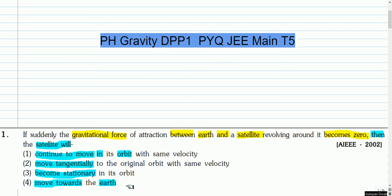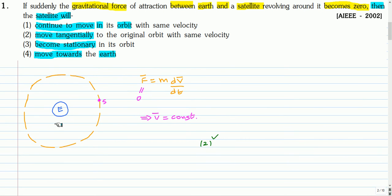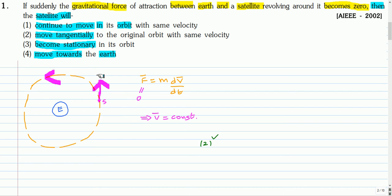Here is the solution. The Earth is here and the satellite is moving around the Earth. By Newton's second law, force equals mass times acceleration. Since the force between the Earth and the satellite suddenly disappears, dv/dt becomes zero, meaning V is constant — V is a vector, so both magnitude and direction are constant. At that location, the velocity vector will be in the tangential direction, so it will continue to move in that direction. Option two — it moves tangentially to the original orbit with the same velocity — is the correct answer.